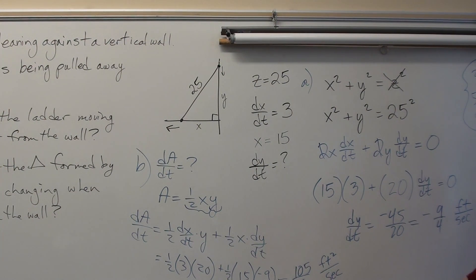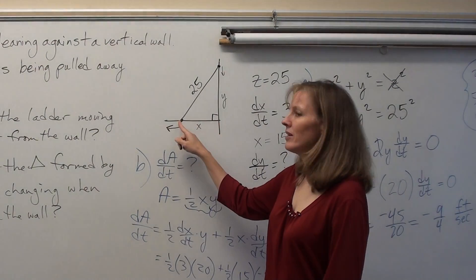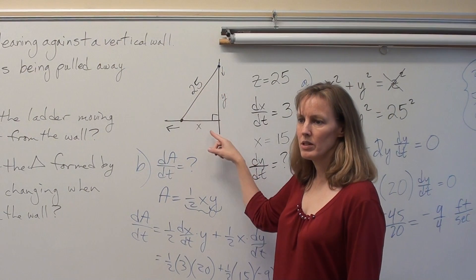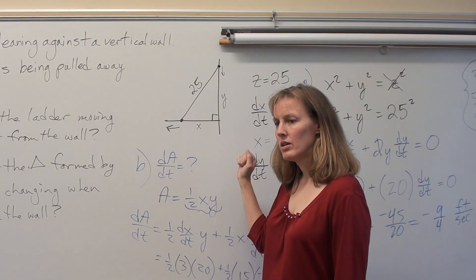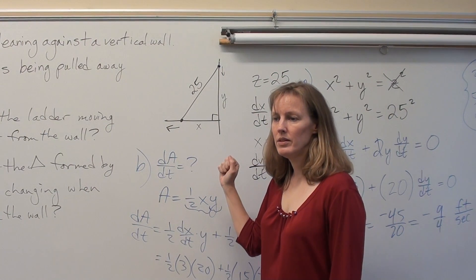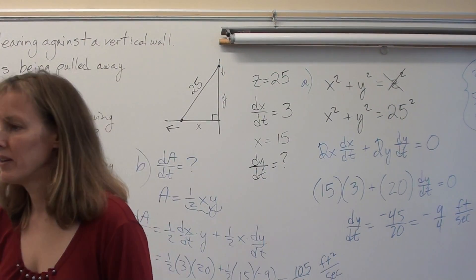Why is it feet squared? Because the units of area... If the length is in feet, then the area is in feet squared, because it's two dimensional. And the volume, of course, would be feet cubed, right?